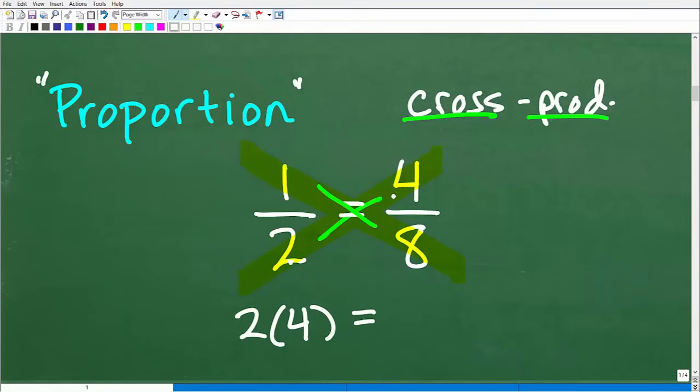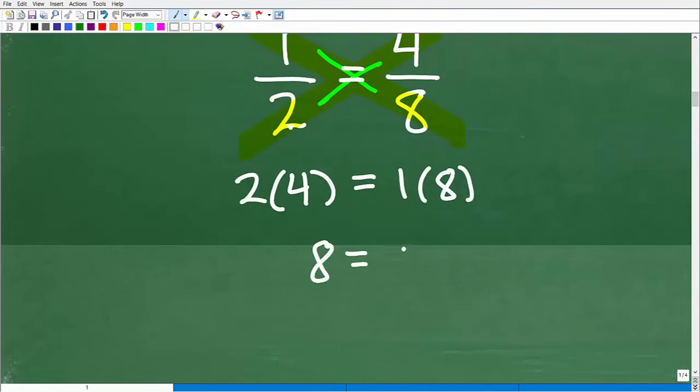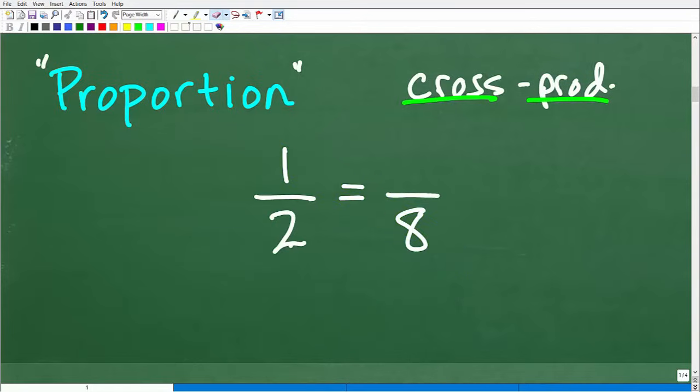And we can see very clearly that 2 times 4 is 8, and 1 times 8 is 8. That is a true statement. So the way we can use the cross product is, let's suppose we have an algebra problem. I'm going to erase this and throw in a variable. This doesn't look too intimidating - 1 half equals x over 8. You can just reason through this and be like, oh well, if this is 1 half, what is the numerator here if this is 8? You can probably by common sense see that the answer is going to be 4.